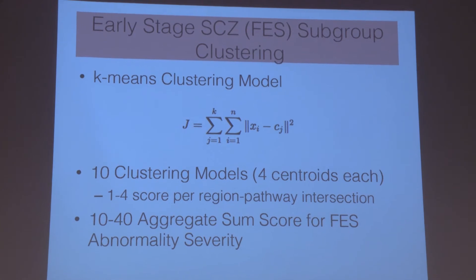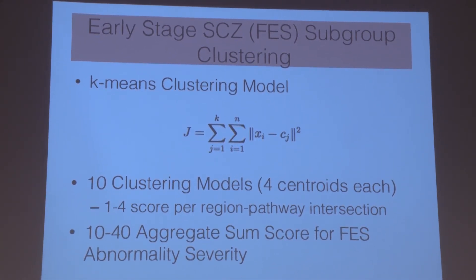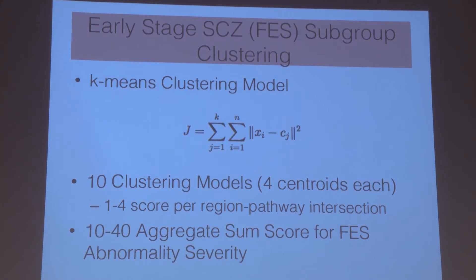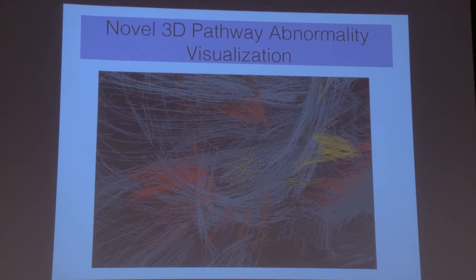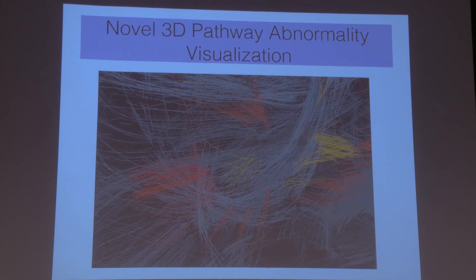We used these tract abnormalities from the specific regions as input to a k-means clustering model. Each of the ten region intersections received a score of 1 to 4 based on inherent abnormality severity, producing an aggregate score of 10 to 40 across all intersections representing overall first-episode schizophrenia abnormality severity. This clustering information was used to create a novel three-dimensional pathway abnormality visualization highlighting locations where tract abnormalities are indicative of early-onset schizophrenia, with the 1-to-4 scores colorizing severity. For example, the thalamus — known for hallucinations — allows a neurologist to see tract abnormalities in that region and target antipsychotic drug delivery accordingly.